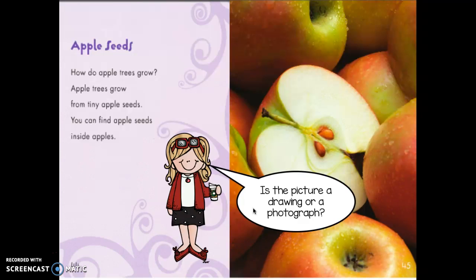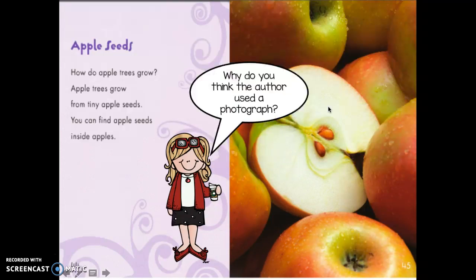That's right — it's a photograph. This picture was taken with a camera. Why do you think the author used a photograph instead of a drawing? Tell your buddy. I definitely think they used a photograph to help the reader see a real picture of an apple and understand this text.